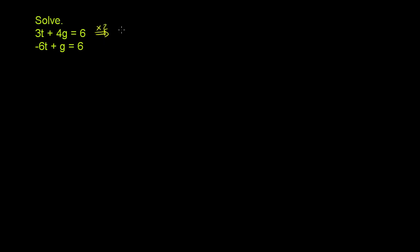So I'm multiplying it by 2. So I'm going to multiply 2 times 3t plus 4g is equal to 2 times 6. Anything I do to one side, I have to do to the other side. The equality still holds true.